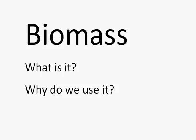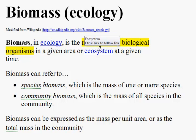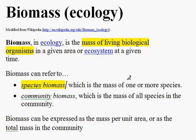Biomass — what is it and why do we use it? In ecology, biomass is the mass of living organisms in a given area at a specific time. This can refer to species biomass, where we look at the biomass of one or more species, or to community biomass — for example, if we want to compare the productivity of different units. It is generally expressed as mass per unit area, or it could be the total mass in a community.